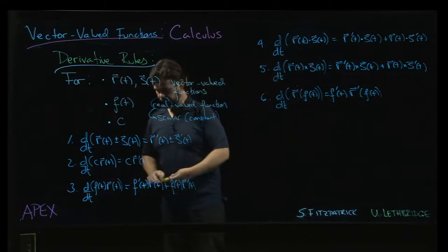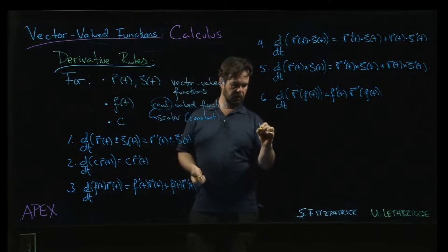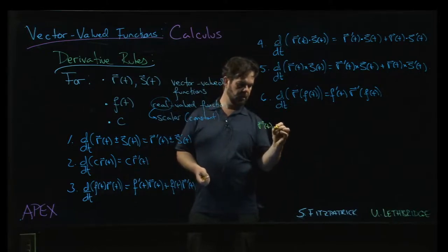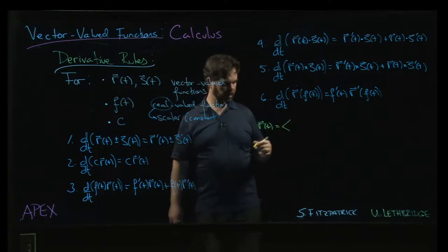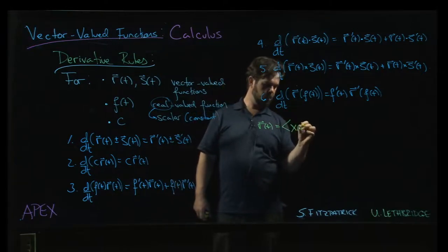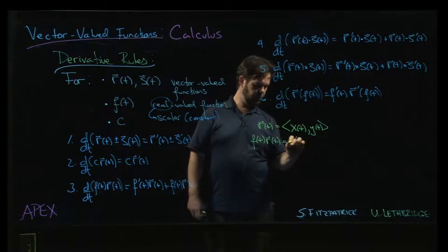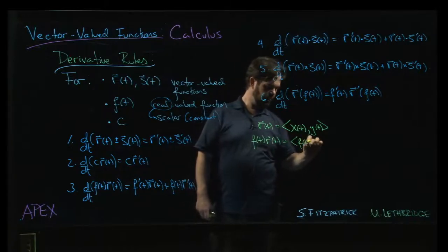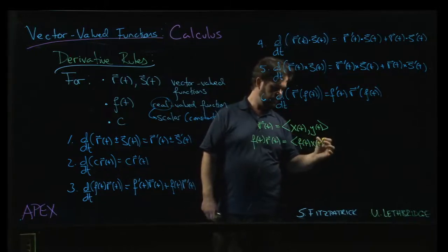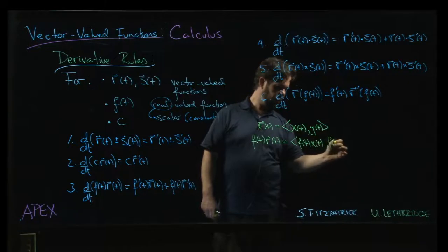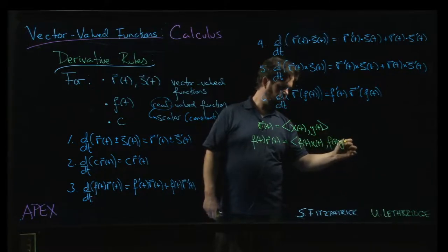So, for example, if you think about, say the third one. So if r of t is, let's say, x of t, y of t, right? Then f of t, r of t is going to be f of t, x of t, f of t, y of t.